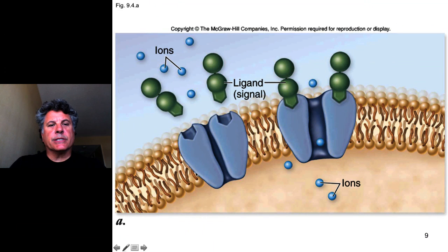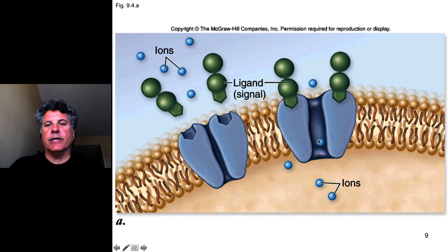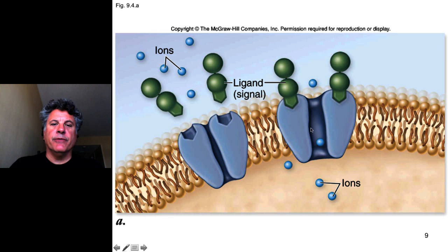As we've just discussed, ion channels can serve as receptors for extracellular signals and can open their pore domains in such a way as to be permeable to particular ions. There exists considerable selectivity in terms of the ions that can traverse a given ion channel's pore. We refer to these types of channels as being gated — G-A-T-E-D — because their gates open in response to a particular signal.